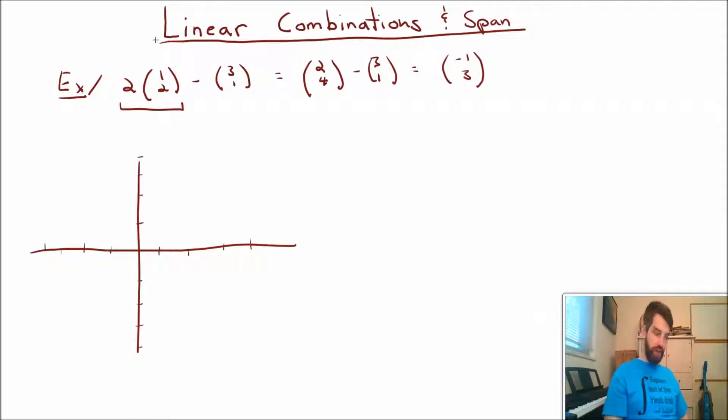Let me first write down my two vectors. I'll do this one in blue first. That is the vector (1,2), so one to the right and two up. It is that vector right there. And then I could also look at this vector (3,1). That's three to the right and one up.